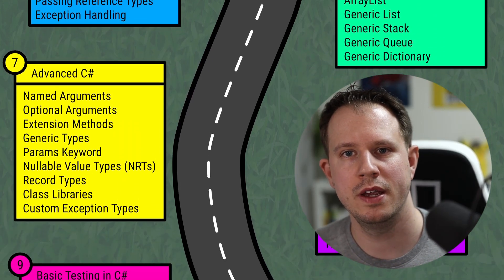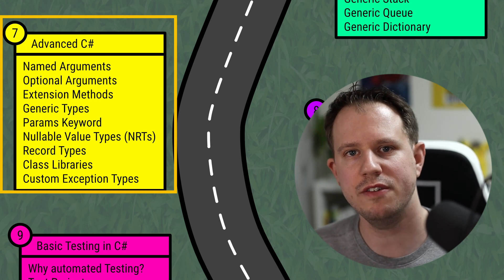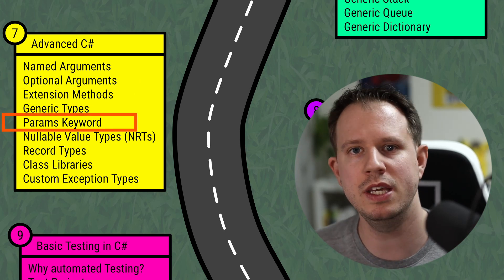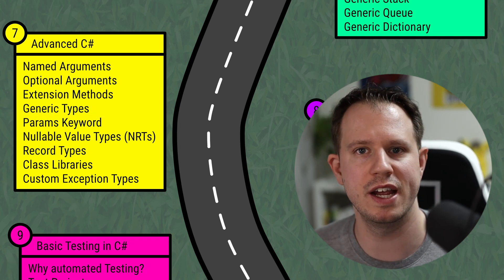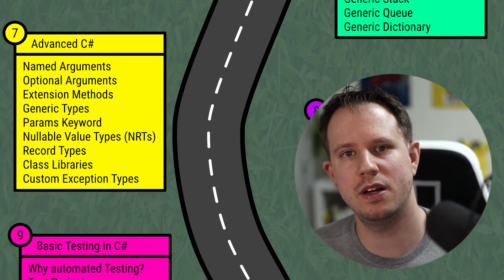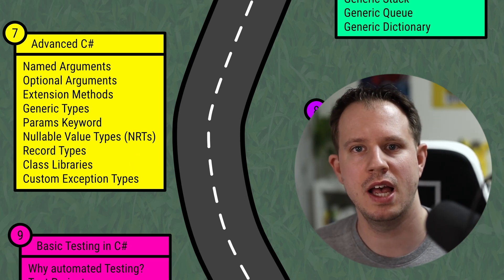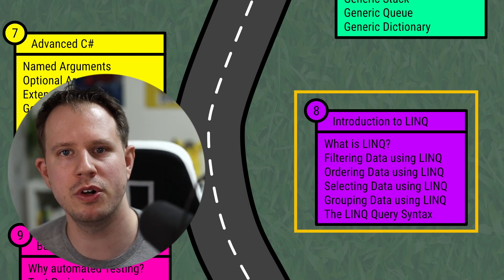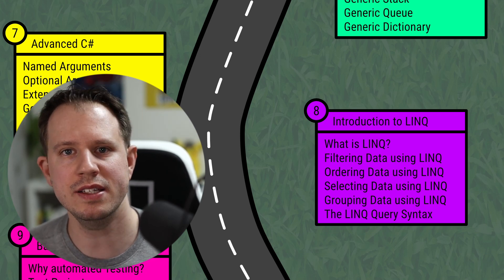Advanced C# is a collection of topics to learn after collection types. Named and optional parameters, extension methods, the params keyword, and generic types are all somewhat connected and allow you to implement a more flexible codebase. Record types are great for building data objects, and class libraries allow you to share code between multiple applications. Language Integrated Query, or LINQ, is a foundational feature of C# — it allows querying data objects from different sources using a standardized API. Filtering, ordering, selecting, and grouping data using LINQ is important to understand, as is the LINQ query syntax.